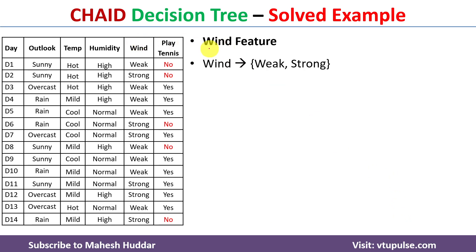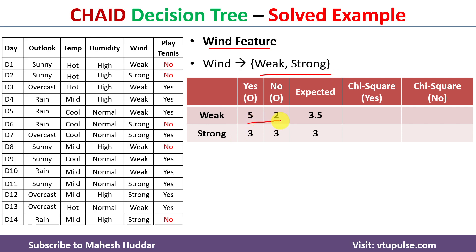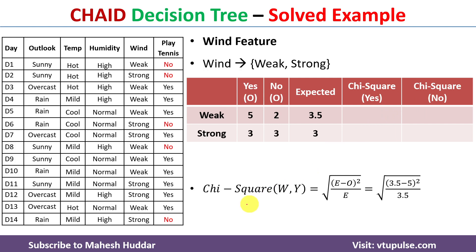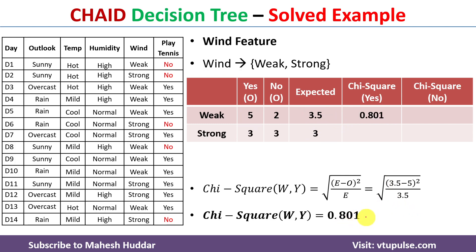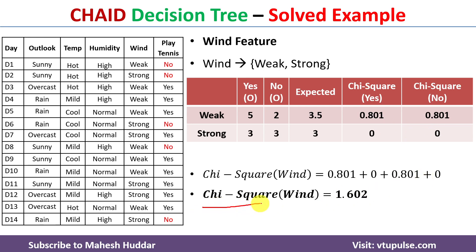The last attribute is Wind, which has two possibilities: weak and strong. We count the observed values and calculate the expected values. Chi-square for wind equals weak given 'yes' = sqrt((3.5 − 5)² / 3.5) = 0.801. We calculate the remaining chi-square values and add them all to get chi-square of Wind = 1.602.